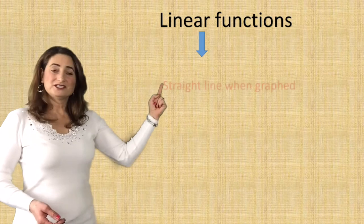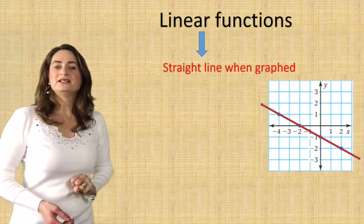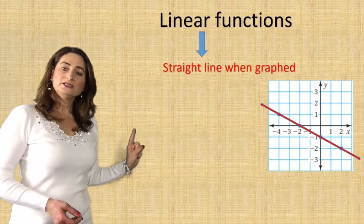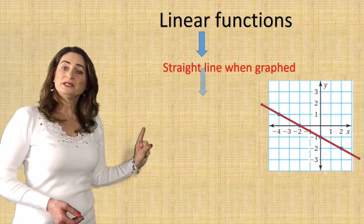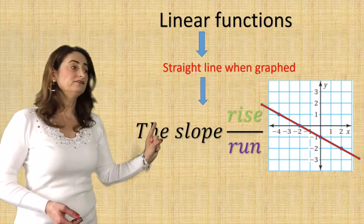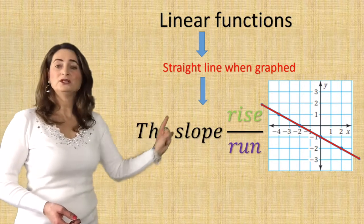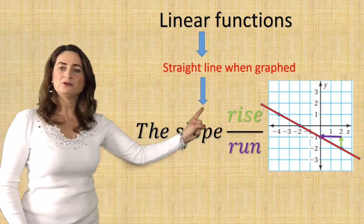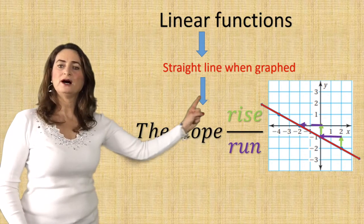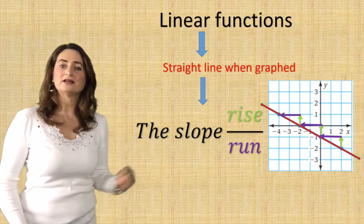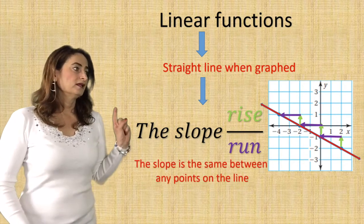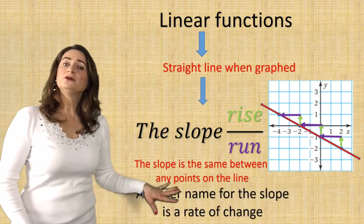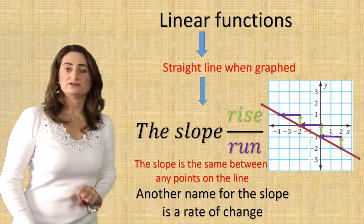Linear functions, when graphed, make a straight line. We also learned that the slope between any two points on the graph is the same, using rise over run. Watch how you go up one, left two — you still land right on the line. Another name for the slope is rate of change.